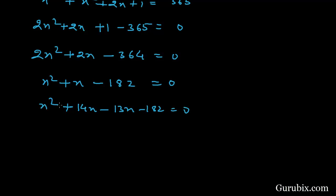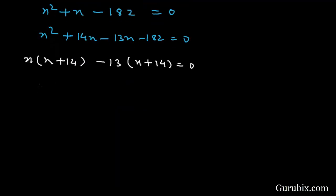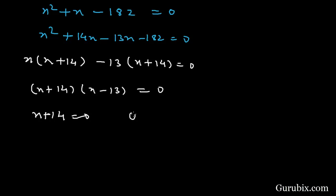We shall split the middle term: x squared plus 14x minus 13x minus 182 equals 0. Taking x common from the first two terms gives x(x plus 14), and taking 13 common from the last two terms gives minus 13(x plus 14). Then taking (x plus 14) common from both terms gives (x plus 14)(x minus 13) equals 0.